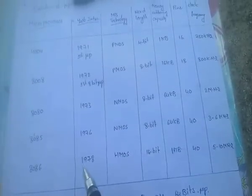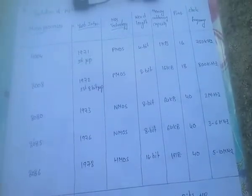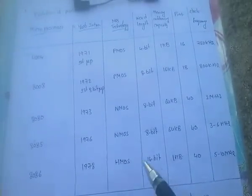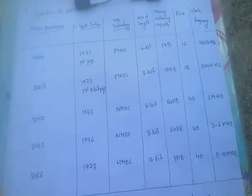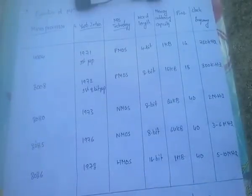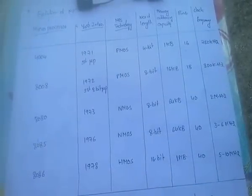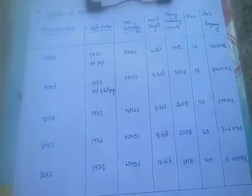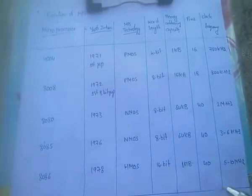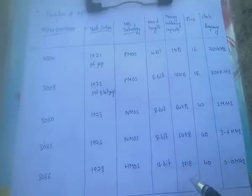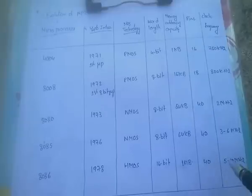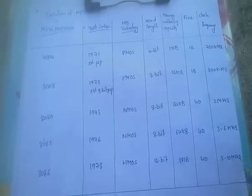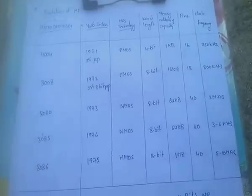The 8086 was introduced in 1978 and uses HMOS technology. Its word length is 16 bits, memory addressing capacity is 1 megabyte, number of pins is 40, and the clock frequency is 5 to 10 MHz.